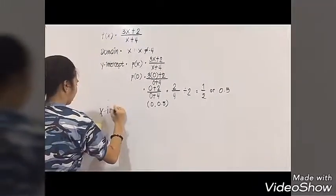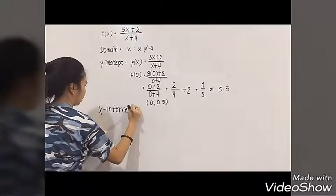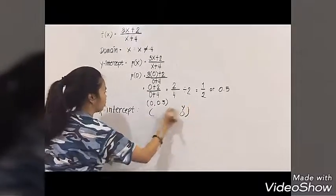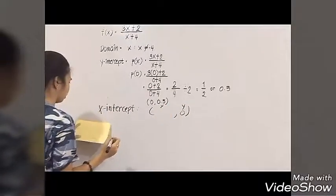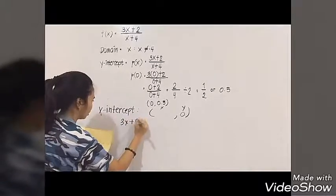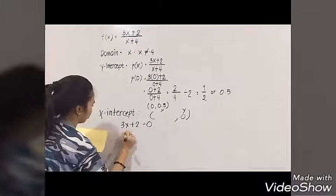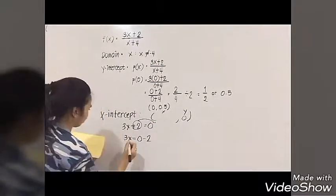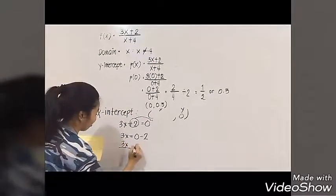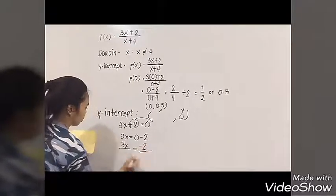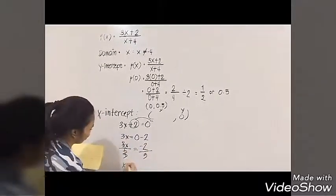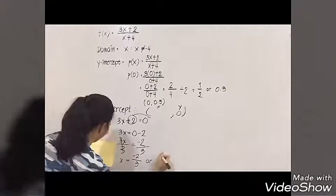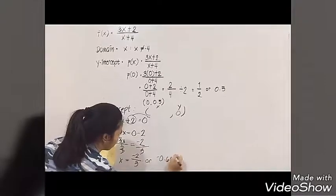Next is the x intercept, which is where y is equal to 0. To solve for this, we need to equate the numerator to 0. So 3x plus 2 equals 0. Transpose 2 to the other side and you get 3x equals negative 2. Divide both sides by 3, and the x intercept is negative 2 over 3, or negative 0.667 when converted to a decimal. Now write its ordered pair so you won't have trouble plotting it on the graph later.